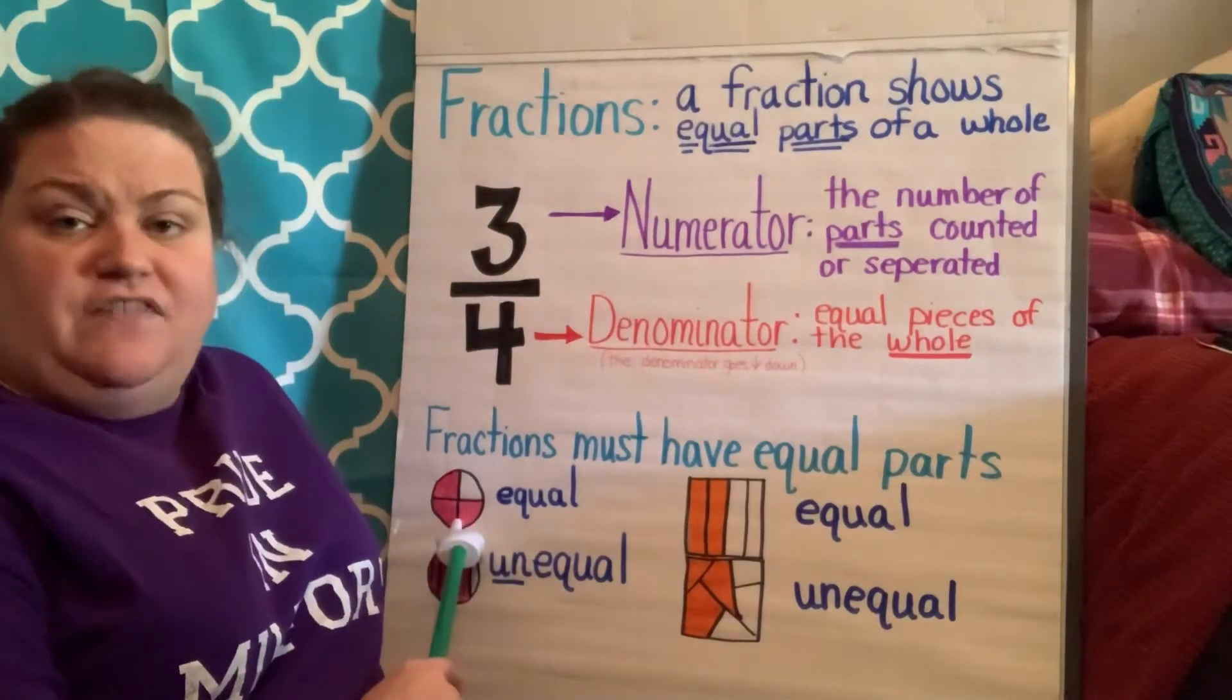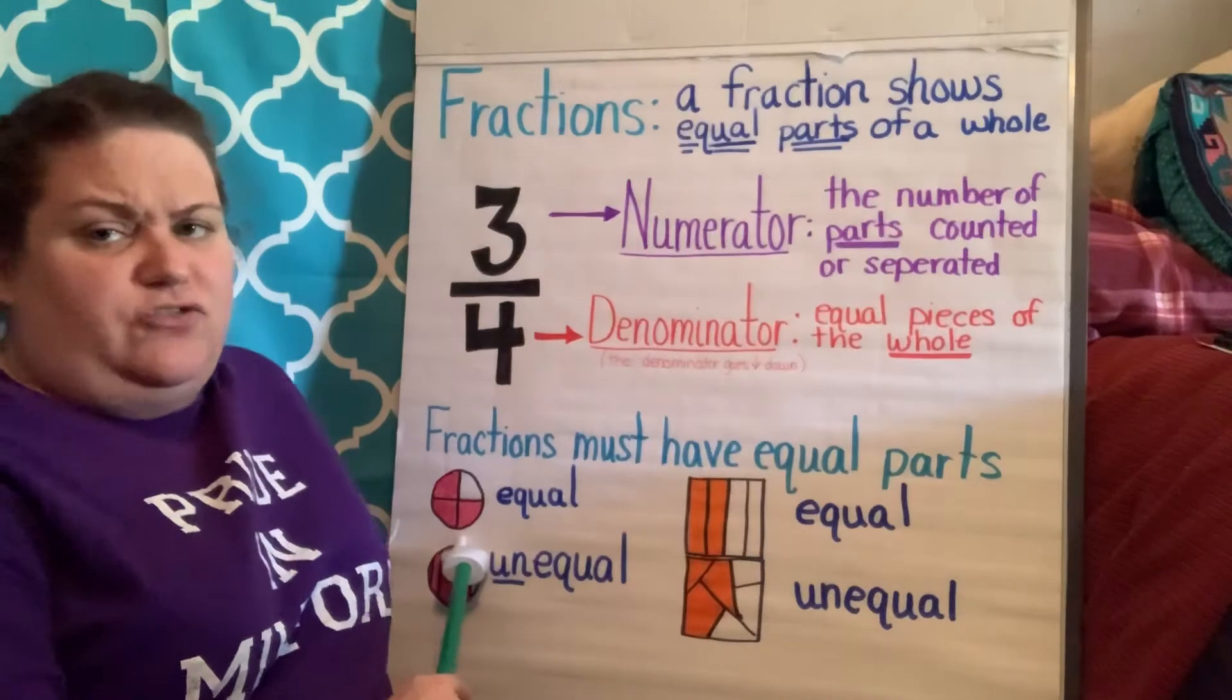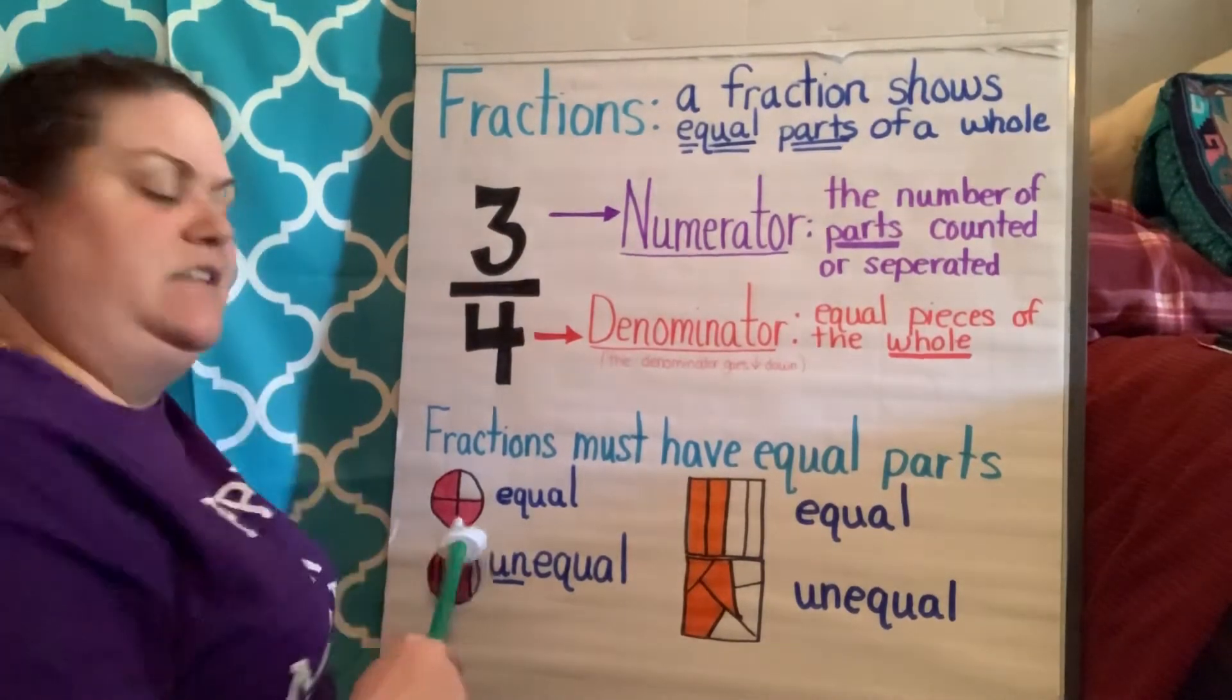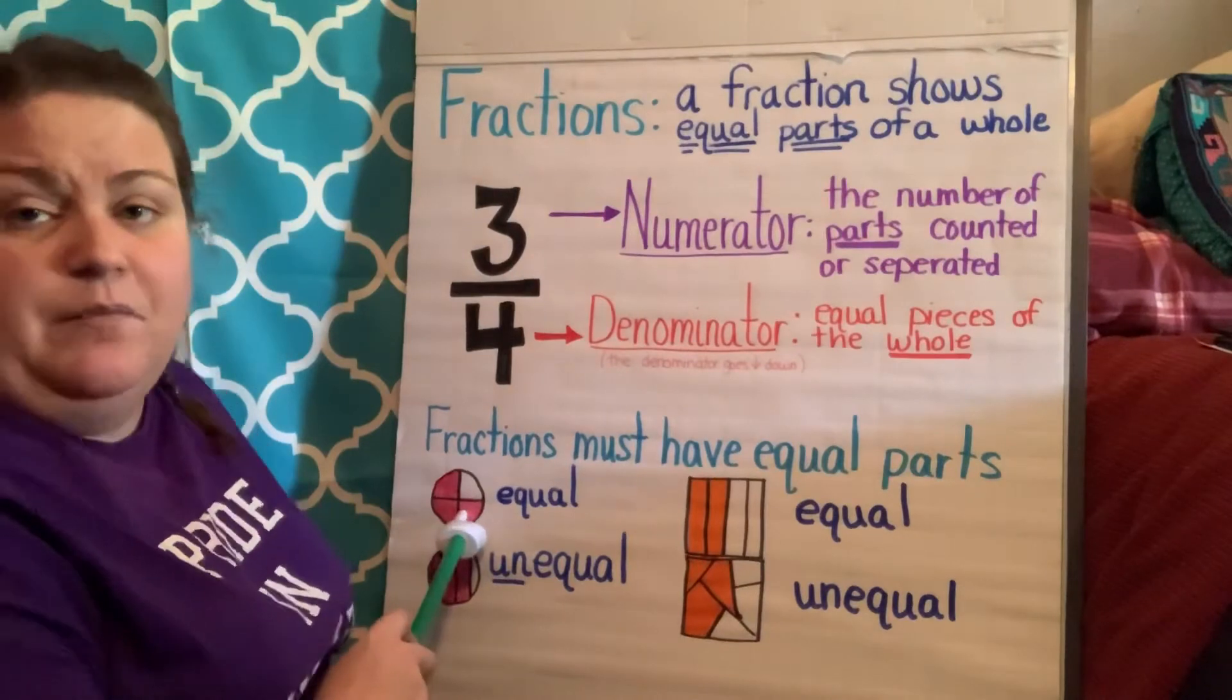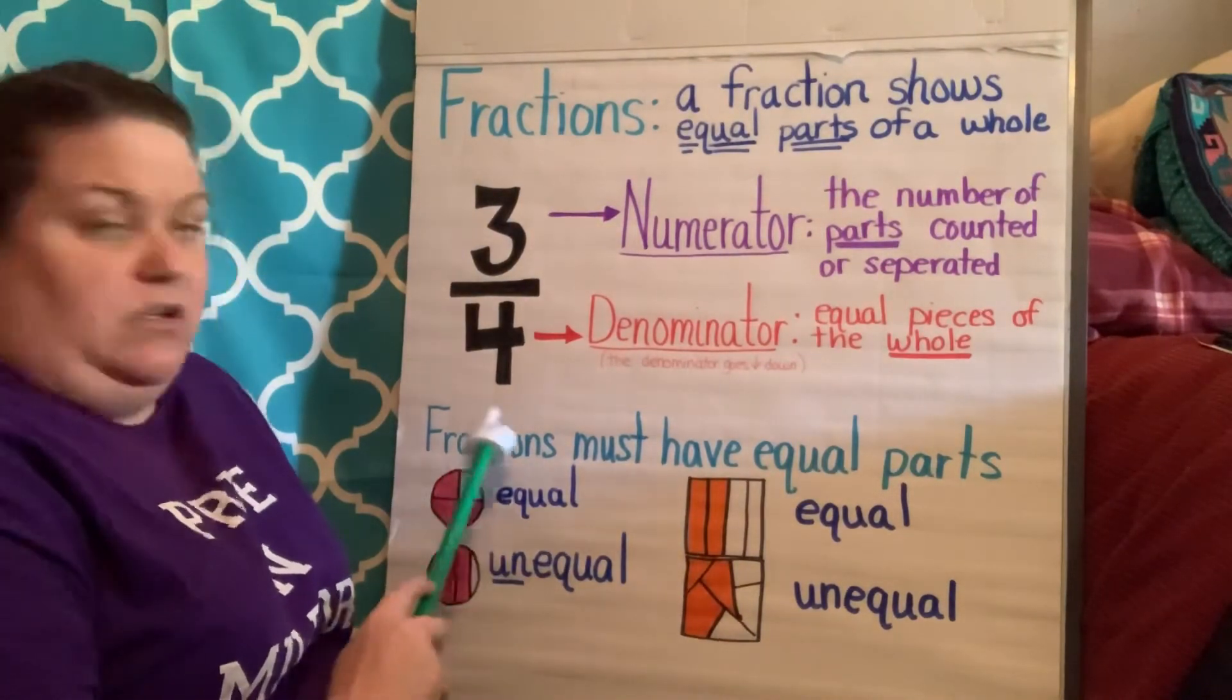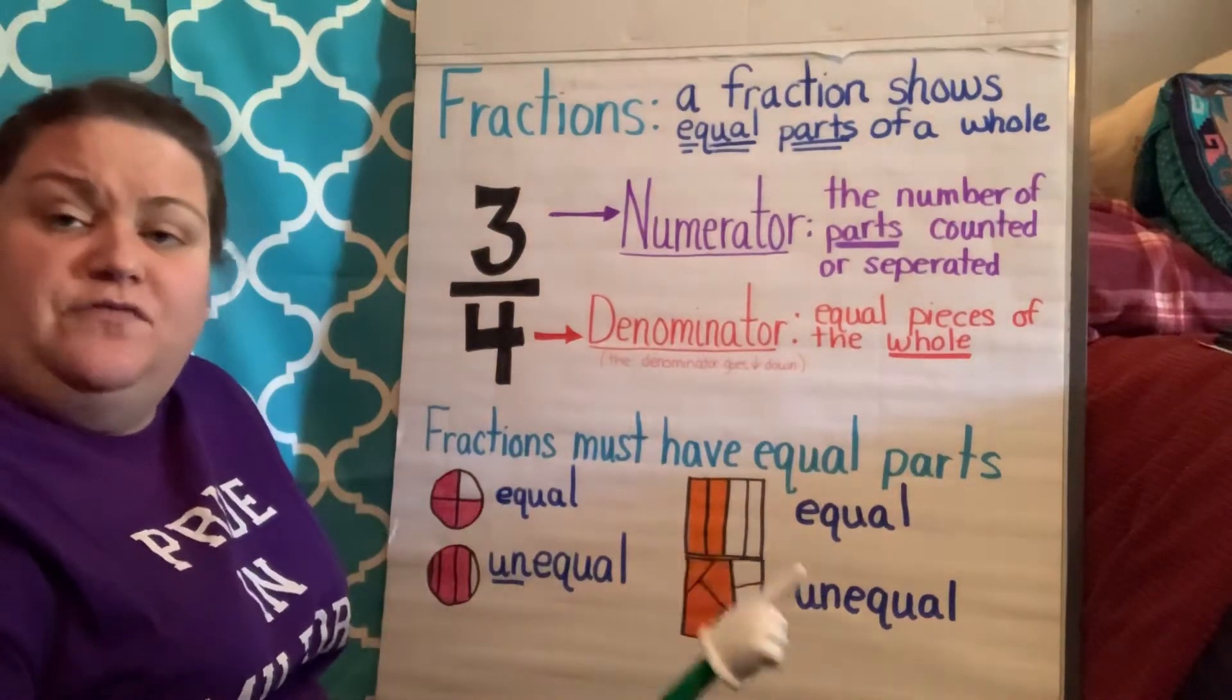So this one right here is divided equally. Circles are pretty tricky to divide. If you divide them into even numbers, they're a little bit easier than dividing them into odd numbers. But this one's divided equally. Each piece is equal. So you could talk about that in terms of fractions.